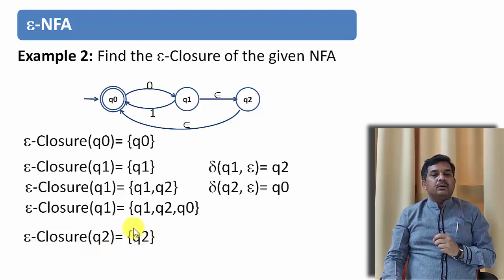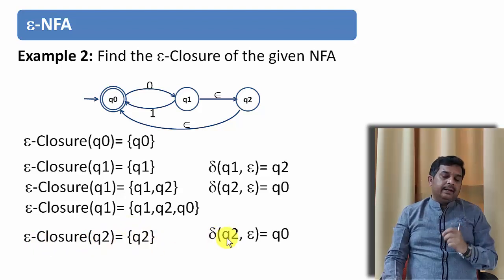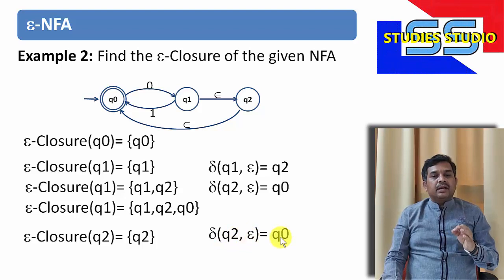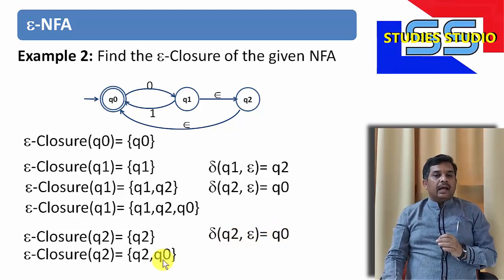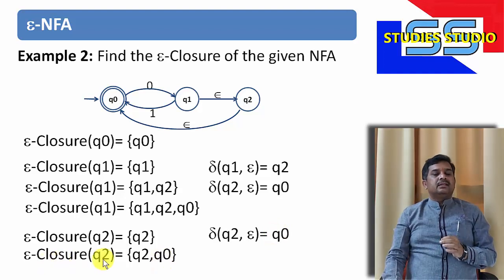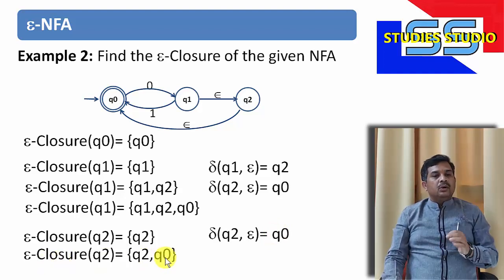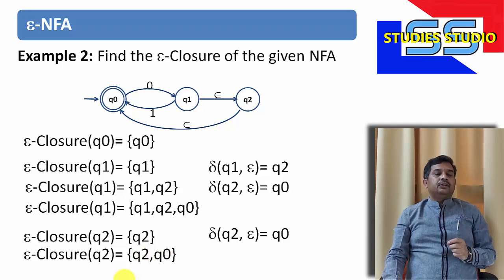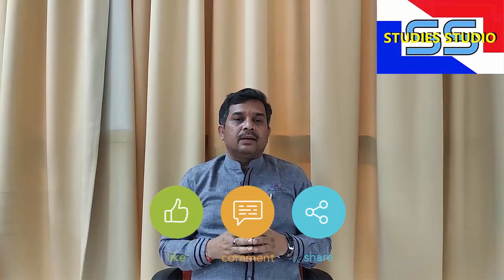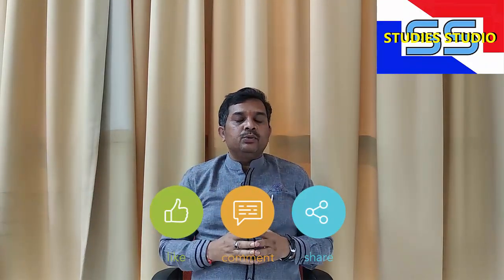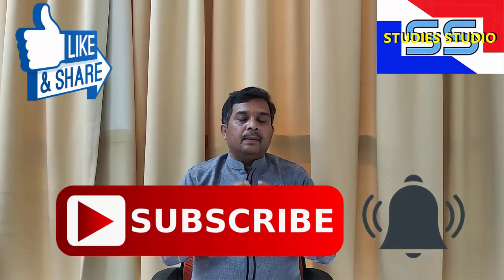Now let us try to find epsilon closure of Q2. So it is Q2. Again we will find epsilon transition on Q2, so it is Q0. And I want to add this to the existing epsilon closure. So epsilon closure of Q2 becomes Q2 and Q0. I hope you understood what is epsilon-NFA and how to find epsilon closure. In our upcoming videos, we are going to discuss more about it.